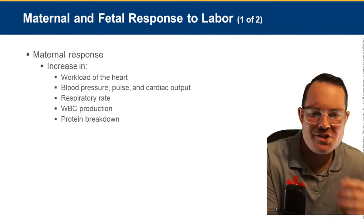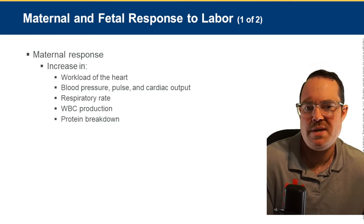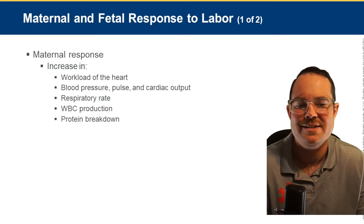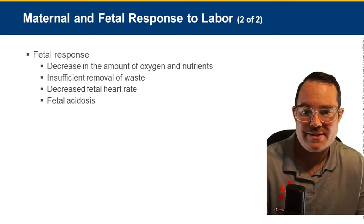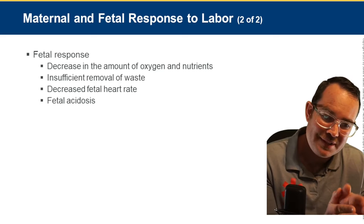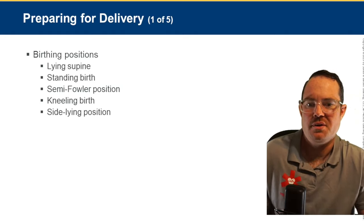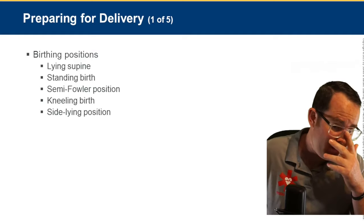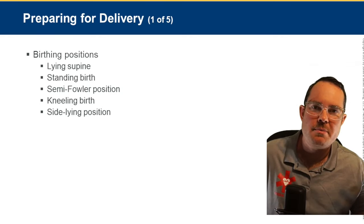During labor, expect the maternal response to include an increase in heart rate, blood pressure, and respiratory rate. The fetal response involves decreased oxygen and nutrients as the baby prepares to transition from placenta-driven life to the outside world. Birthing positions vary — the most common in EMS is supine on the stretcher. Semi-Fowler's, side-lying, and supine positions are all possible in the field.